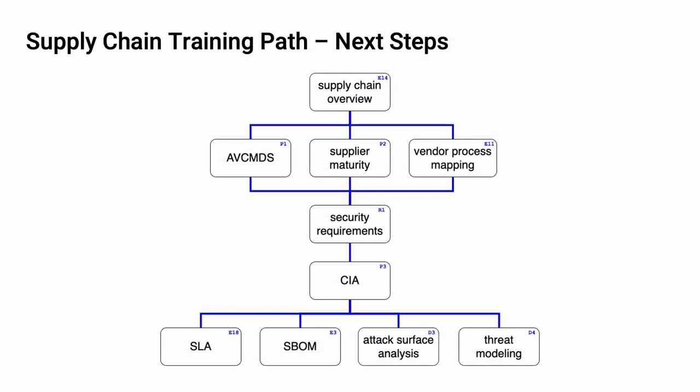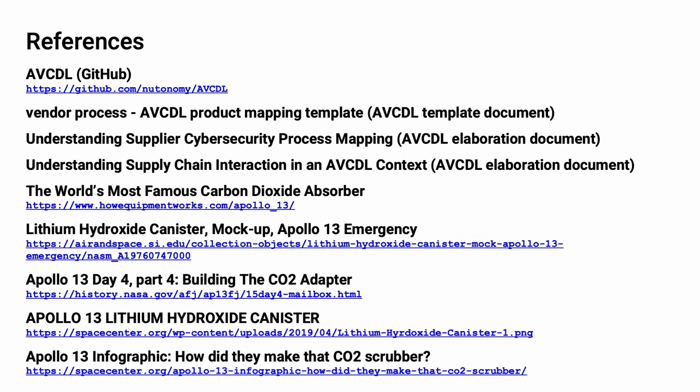The next step in this training sequence is to complete the other two courses at this level, if you haven't already. The AVCMDS training covers the supplier's cybersecurity manufacturer disclosure statement. The supplier self-reported cybersecurity maturity training covers how a supplier self-reports the maturity of their processes in the context of the AVCDL. Once these three trainings at this level are complete, you should proceed to the security requirements training. Here are the references to the source material used in the creation of this presentation — they'll also be included in the video description. Additionally, this presentation source material will be provided in the AVCDL GitHub repository.